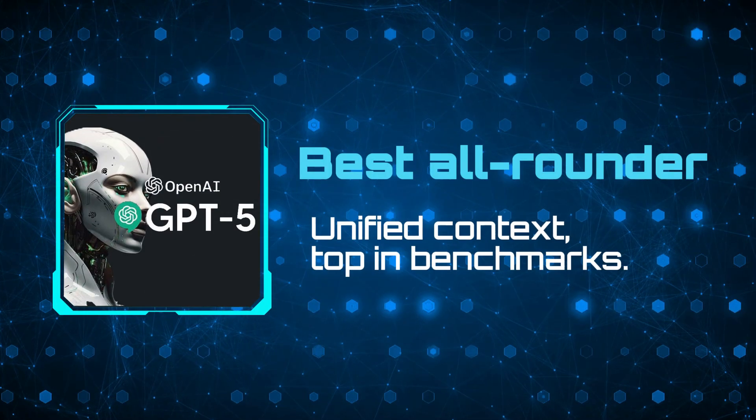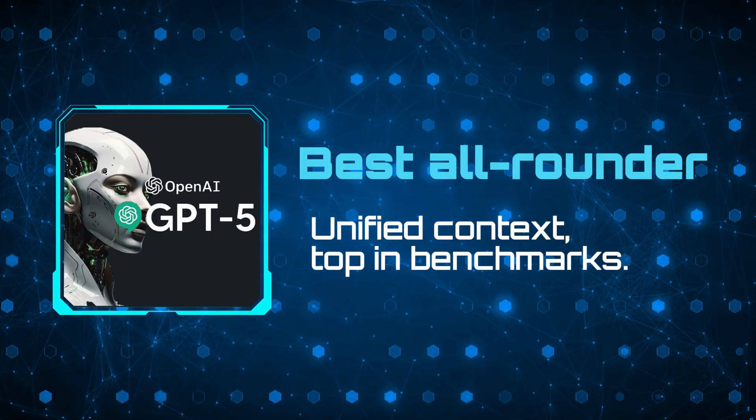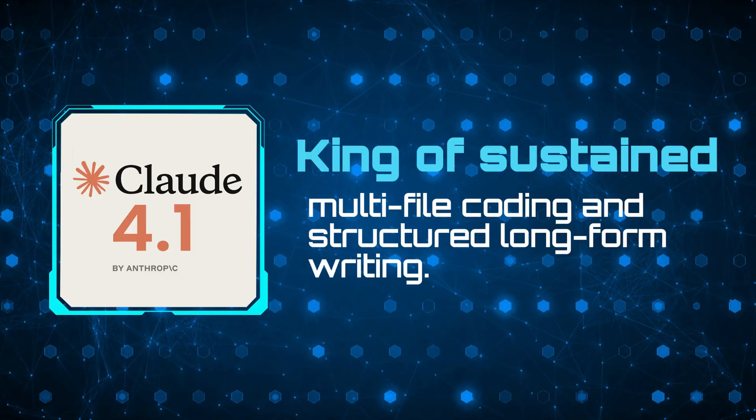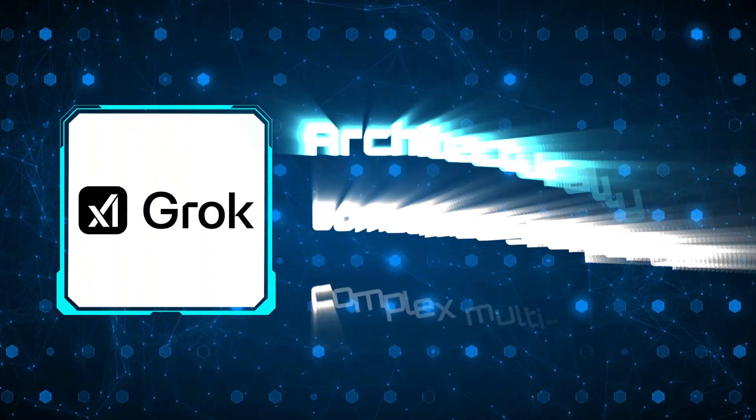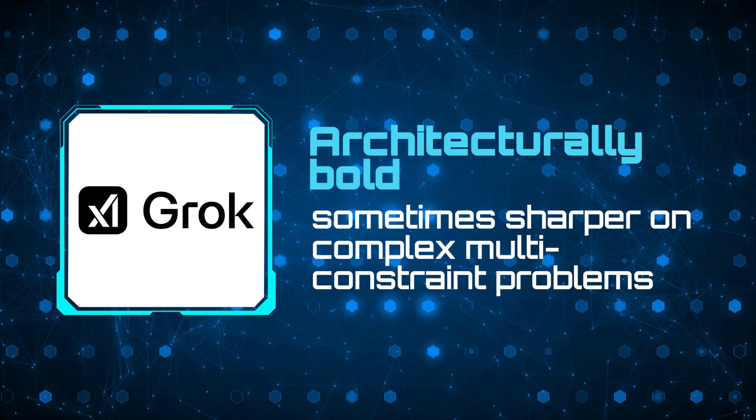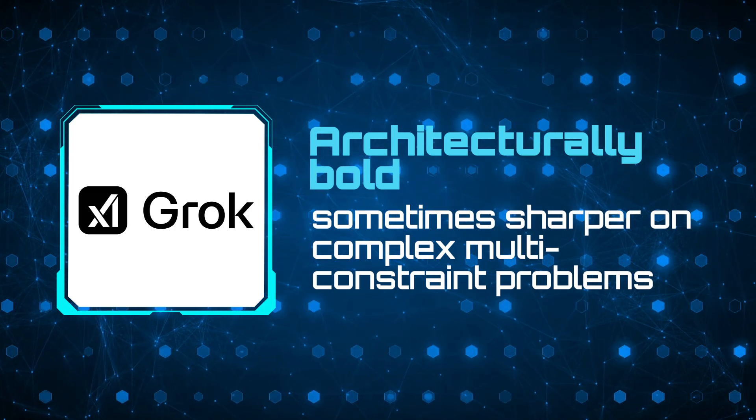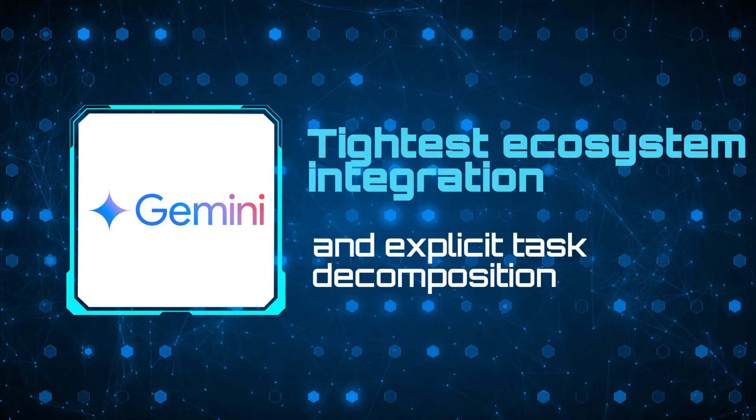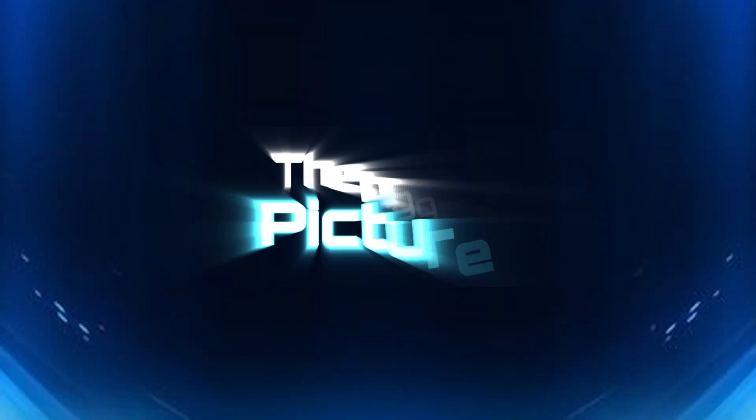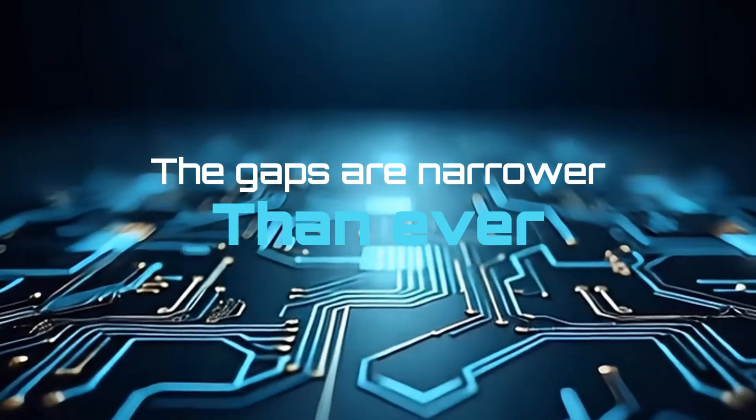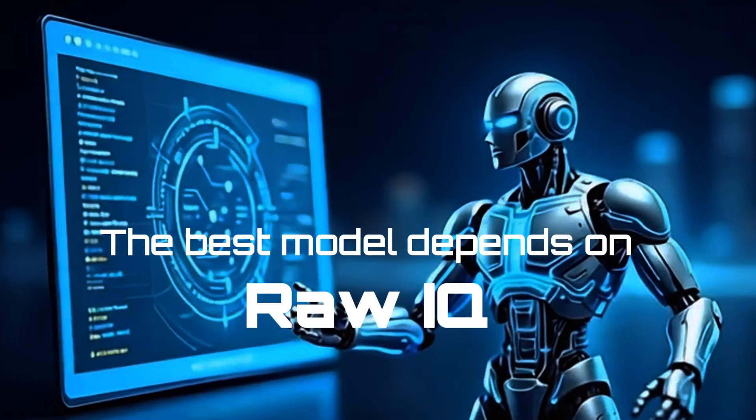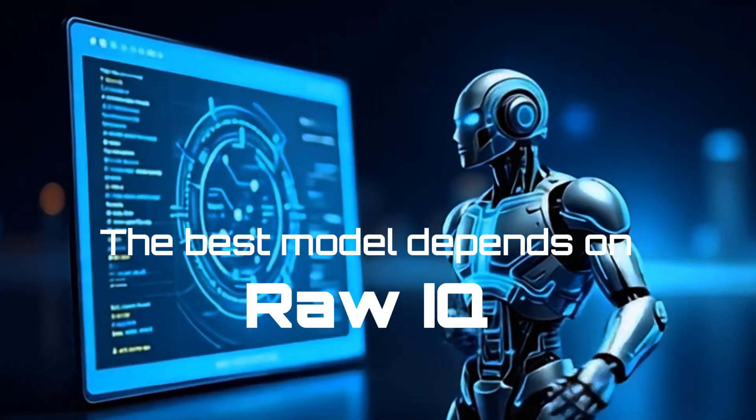The scoreboard today looks like this. GPT-5: best all-rounder, unified context, top in benchmarks. Claude Opus 4.1: king of sustained multi-file coding and structured long-form writing. Grok 4 Heavy: architecturally bold with multi-agent reasoning, sometimes sharper on complex, multi-constrained problems. Gemini Ultra: tightest ecosystem integration and explicit task decomposition. But the bigger picture? The gaps are narrower than ever. And the best model now depends less on raw IQ and more on whether it's paired to the right task, data set, and toolchain.